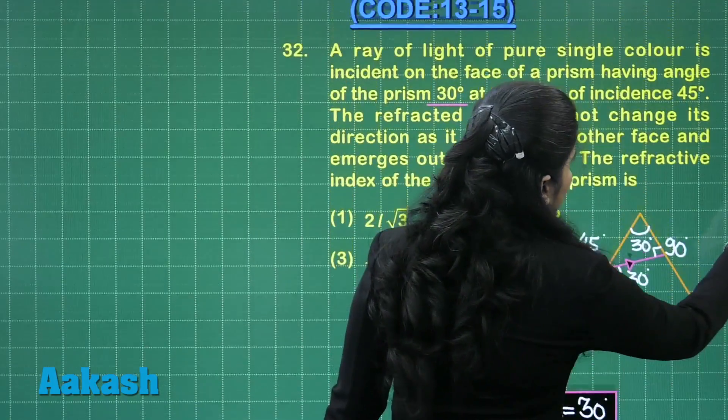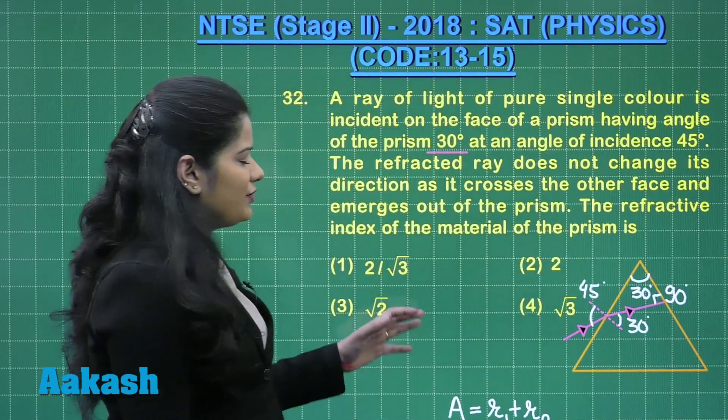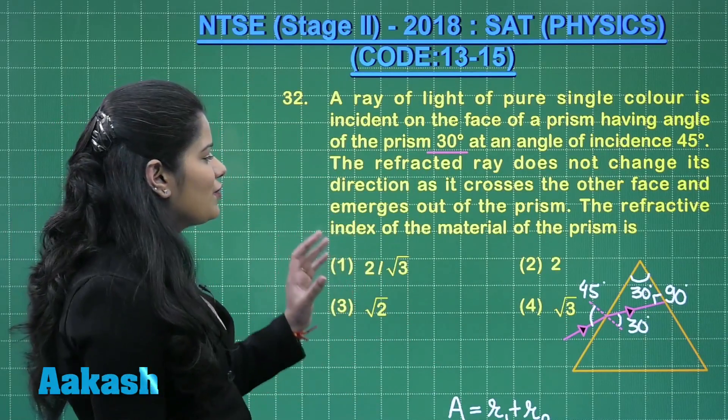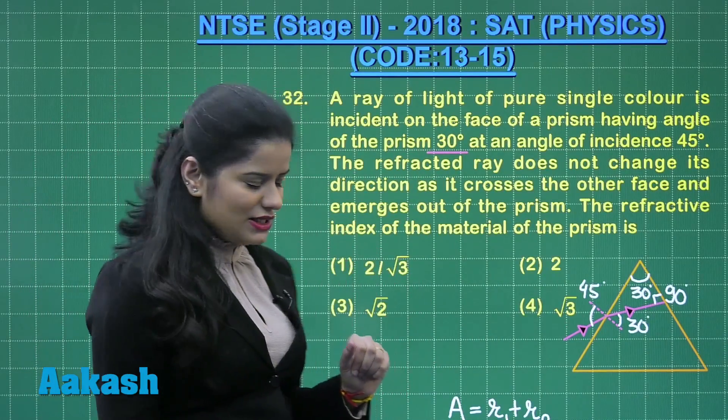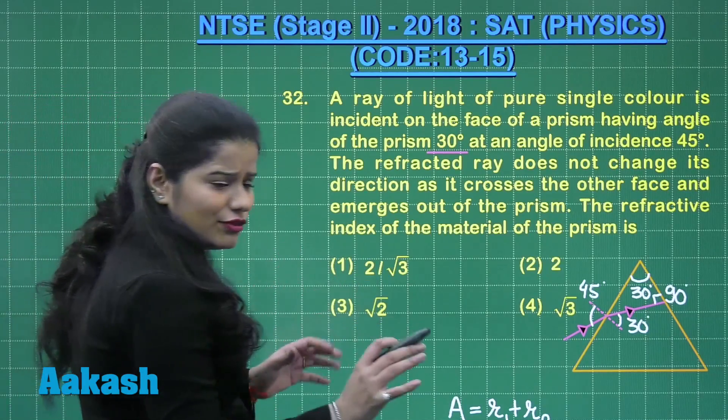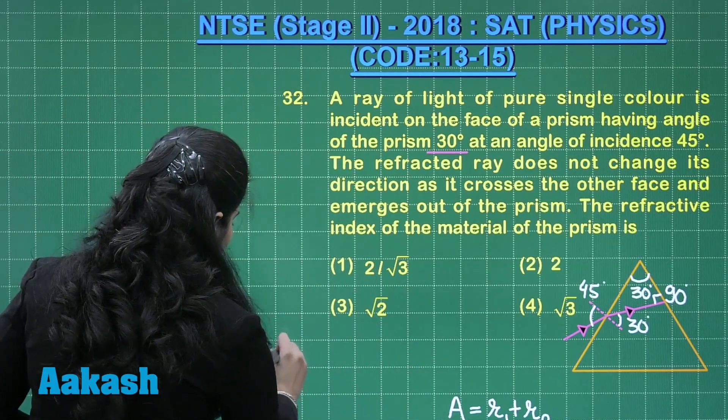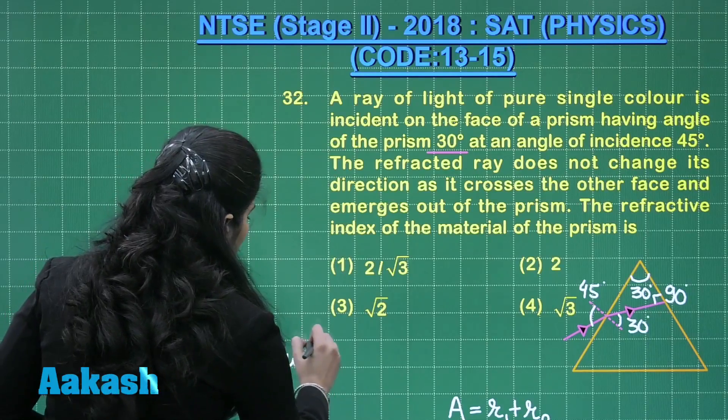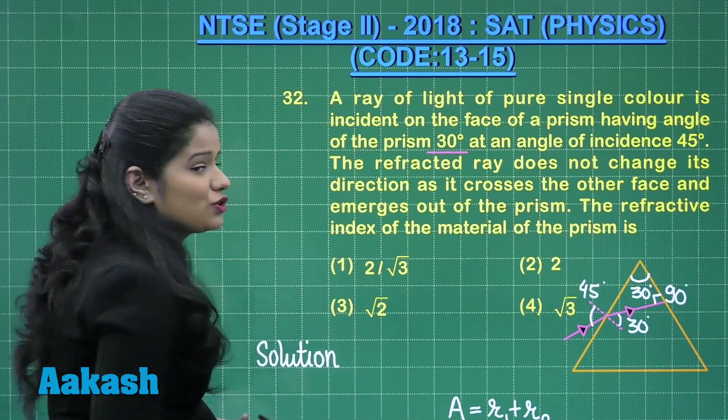Now let's see what the question further says. The question further says the refractive index of the material of the prism is. So in this question what we need to find out, actually I just have solved half of the question.